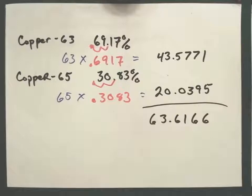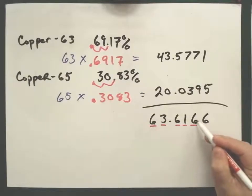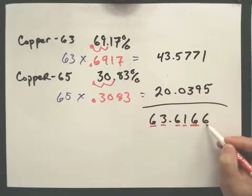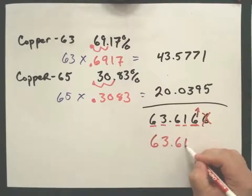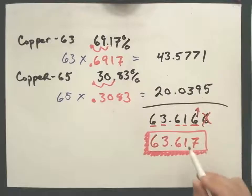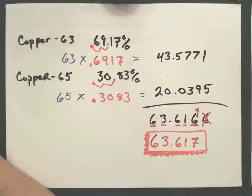Now I round to five total digits. Counting from the left: 6, 3, 6, 1, 6 — that's five digits. I look at the next digit, which is 6 — bigger than 5 — so it rounds up. My answer is 63.617. Make sure you round correctly to five digits. If you do the problem correctly, you'll get exactly the same answer, so rounding errors will give you wrong answers.